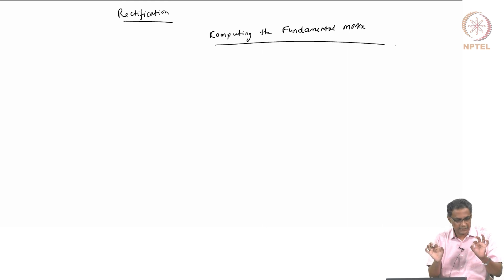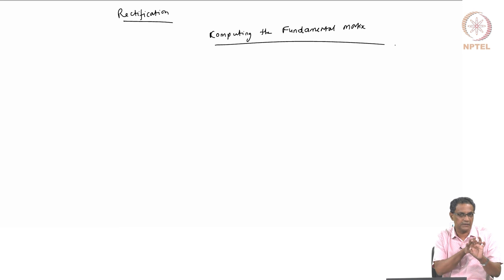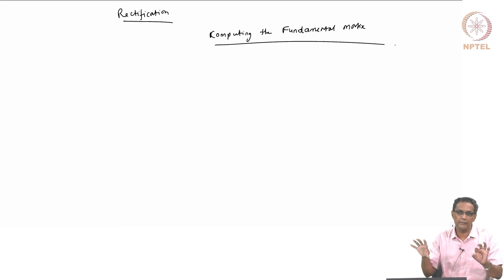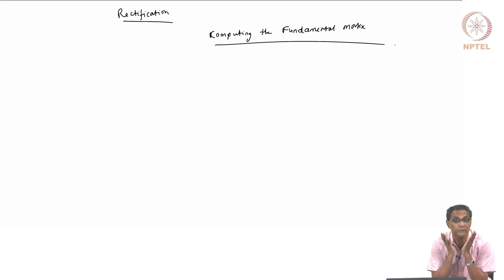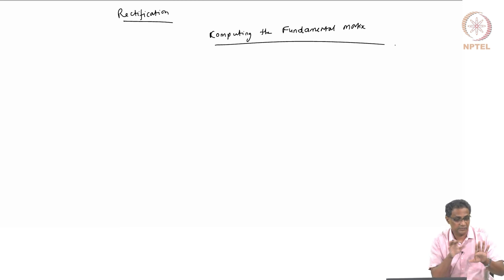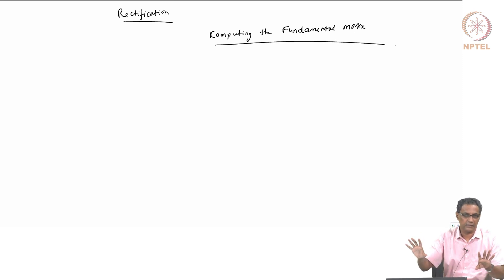Now if I take my left camera and give you a depth map — this is the depth map from the left camera — what can you say about the depth map for the right camera? Suppose I say you can use the same image as a depth map for the right. Will that be correct?